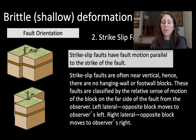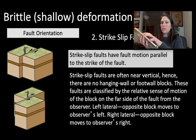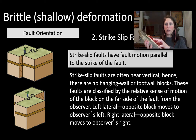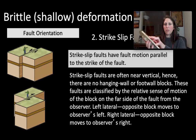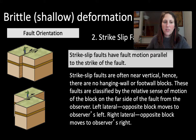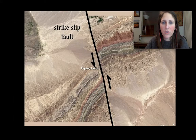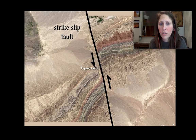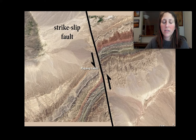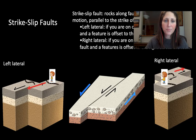Our last type of fault is not a dip-slip fault but a strike-slip fault. Our strike-slip fault is when the rock is moving along the strike line — is it moving left or right? Whereas dip-slip is up or down, strike-slip is left or right. Strike-slip faults are really better viewed in map view — the San Andreas Fault in California is a great example. There are also some nice YouTube animations to drive that home.